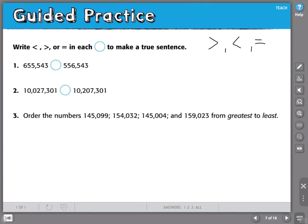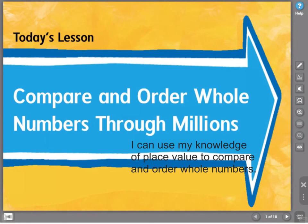That brings us to the end of today's lesson. Our lesson today was on comparing and ordering whole numbers through the millions. We used our place value chart to make sure that we were using our knowledge of place value to compare and order these numbers.